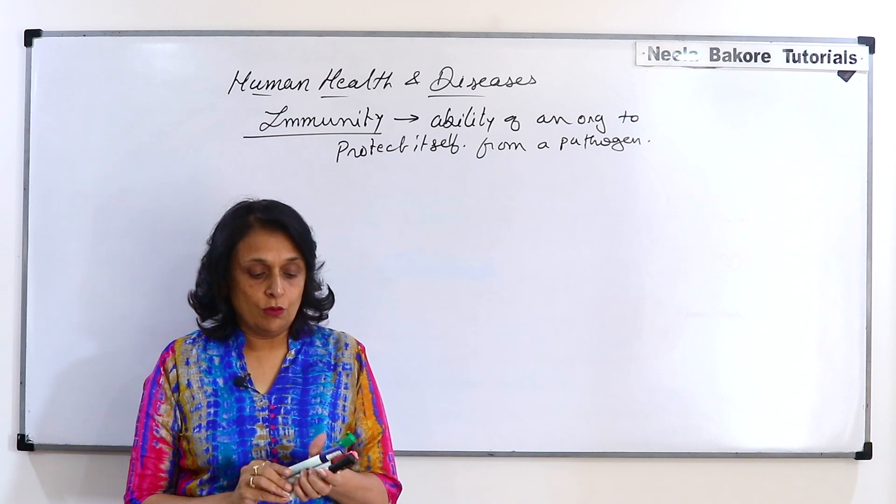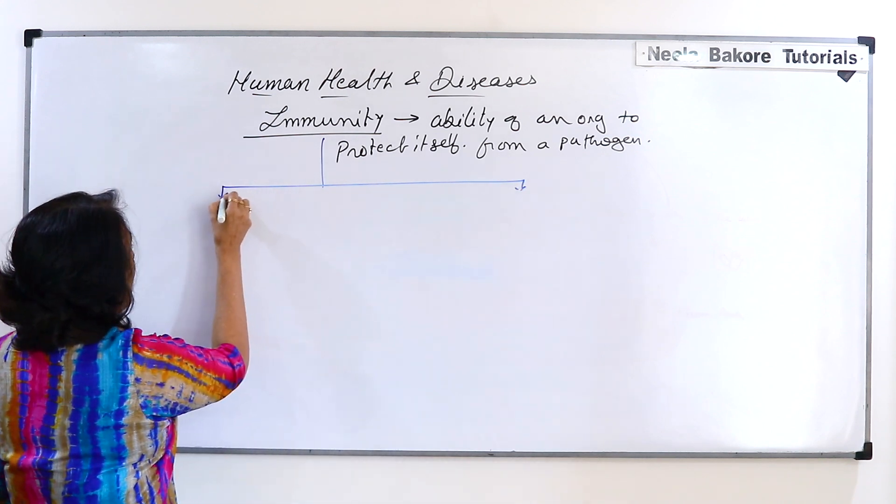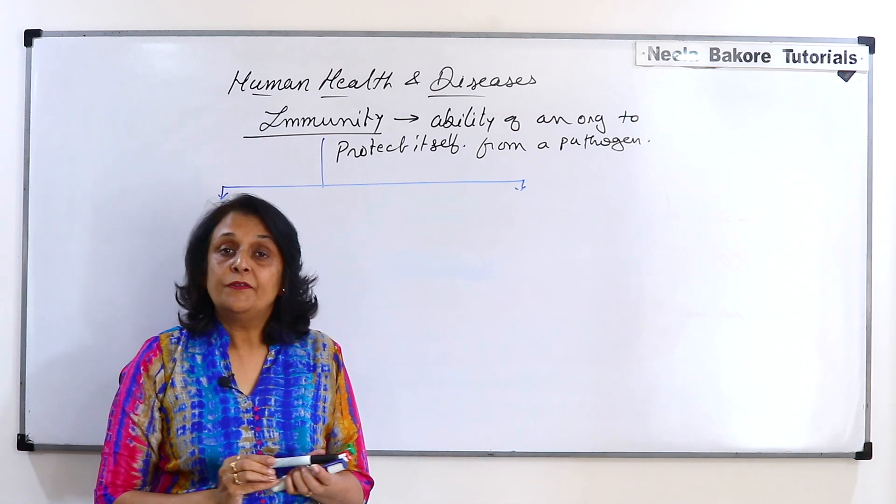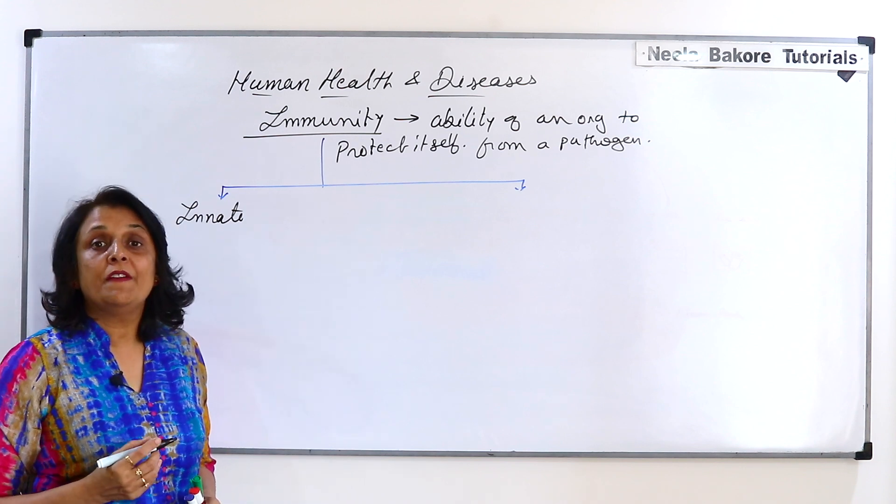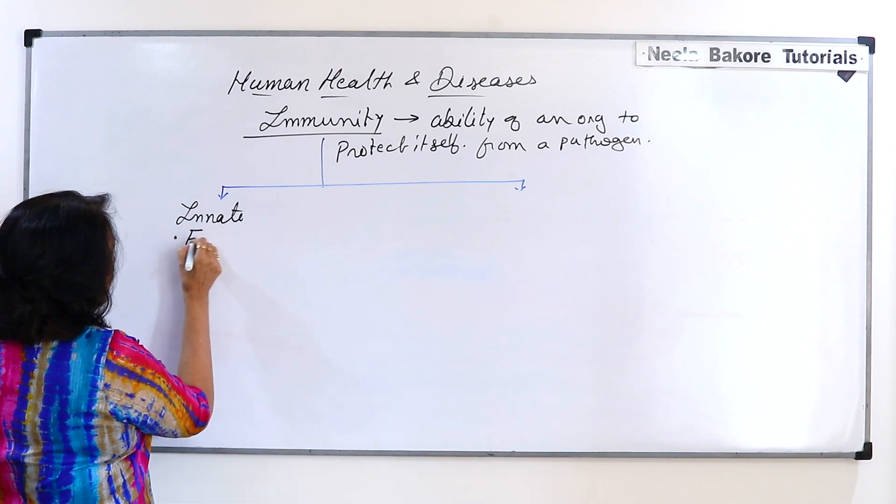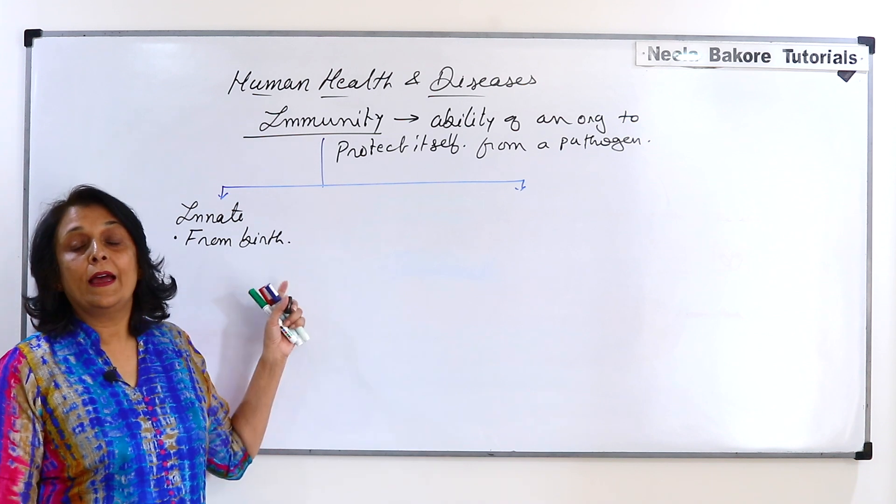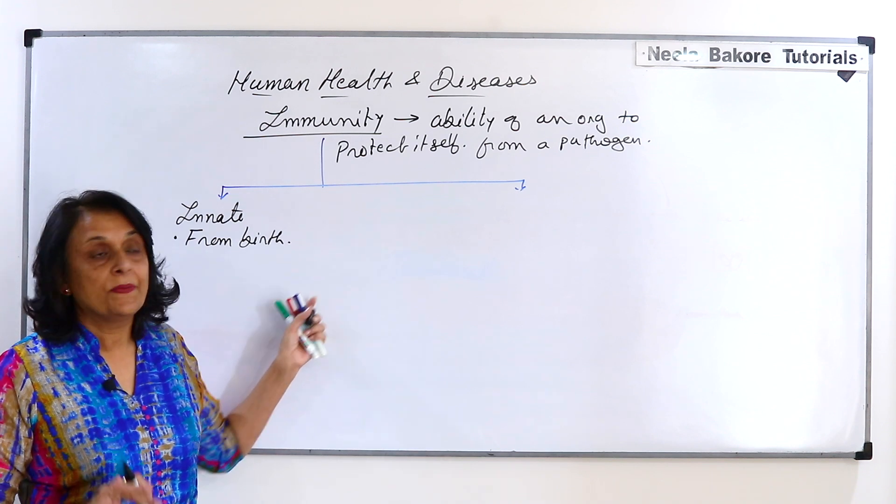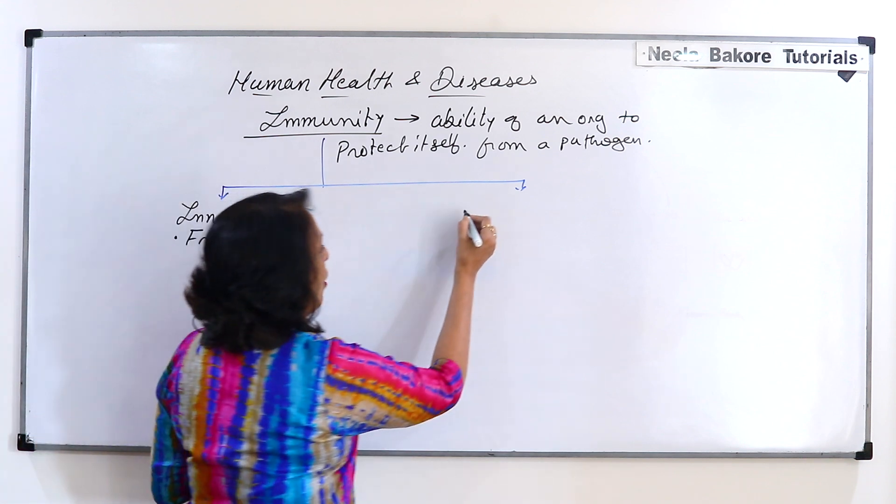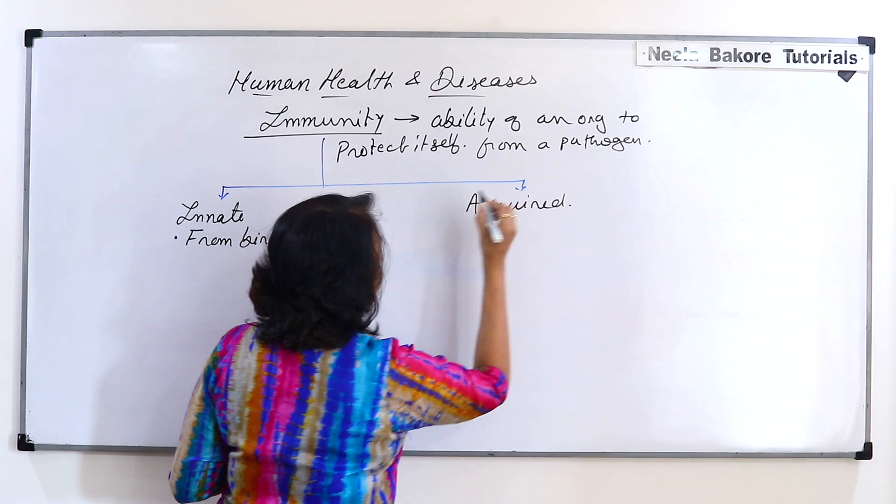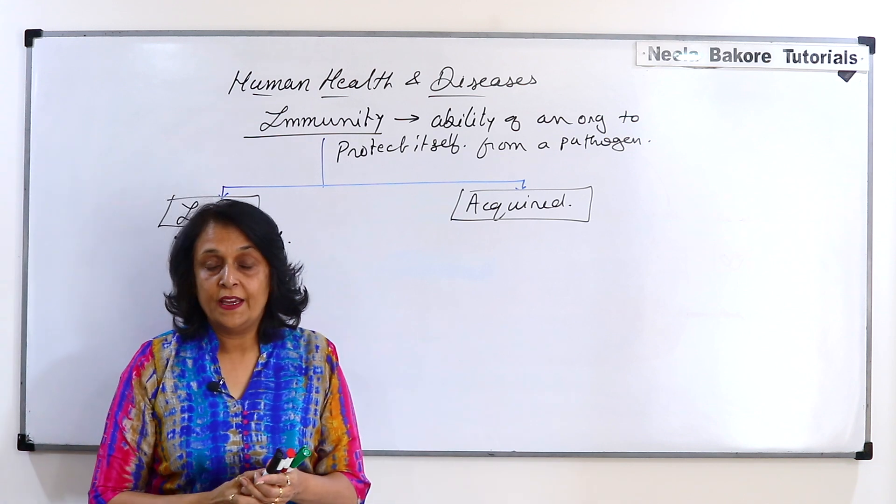Now we can classify this immunity into two categories depending upon when and how we get this immunity. The first is called innate immunity. Innate means the immunity that we have from birth or in other words we are born with this type of defense mechanism. And the second is the type of immunity which we acquire after we are born. So this is called acquired immunity.